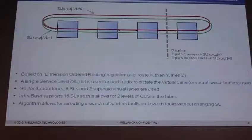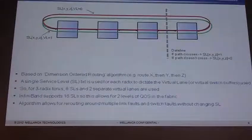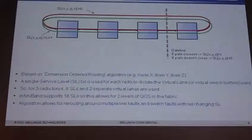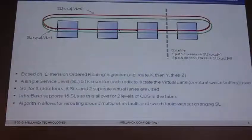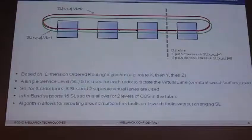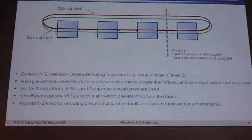For a 3-radix torus, I use three bits, which means eight service levels and two separate virtual lanes — always VL zero or VL one. InfiniBand supports up to 16 service levels; I'm using eight. This allows me to take eight service levels for one level of QoS and eight service levels for another, which is where I got the name torus2qos. I could put compute traffic on service levels zero through seven and storage traffic on the other eight, keeping those traffic types completely separate from each other.